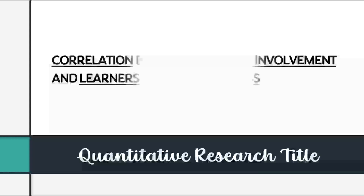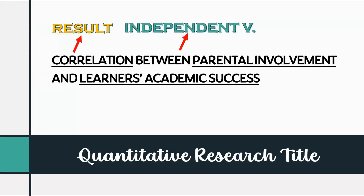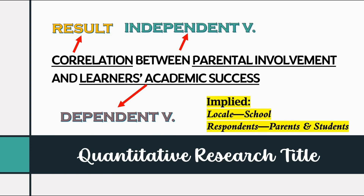The next one: correlation between parental involvement and learner's academic success. The expected result is shown by the word 'relationship,' while the independent variable which would impact change to the dependent variable would be parents' school involvement. And our dependent variable is the learner's academic success. Meaning to say, the academic success of the learners according to the study from the title would be dependent on the parents' school involvement. Our locale obviously is the school and our respondents would be the parents and students.